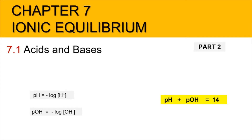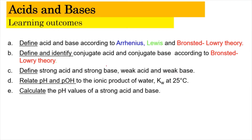Hi, assalamualaikum and a very good morning. We are now in Chapter 7, Ionic Equilibrium, focusing on subtopic 7.1 Acids and Bases, Part 2 of the video. In this video we're going to learn about the relationship between pH and pOH, relating that with the ionic product of water, Kw, at 25 degrees Celsius. We'll also learn to calculate pH values for strong acids and strong bases. Learning outcomes B and E will be covered in this part.